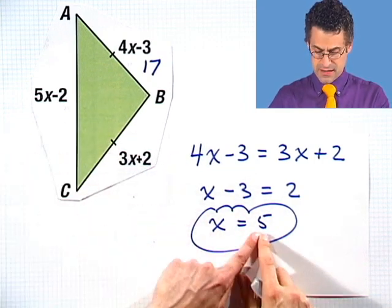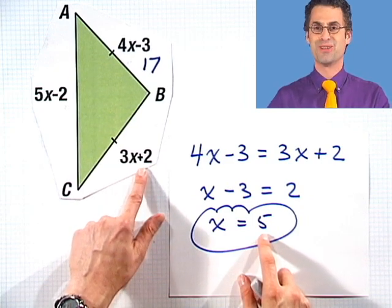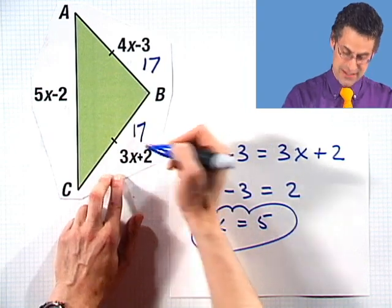Let's see. If I plug in 5 into this, I see 5 times 3, which is 15, plus 2 is 17. Nice. Looking good.